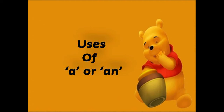Our first topic of this lecture is uses of A or AN. In the last lecture I covered vowels and consonants. The sounds of the alphabet which are vowels are A, E, I, O, U — these are vowels, and the remaining letters are consonants.